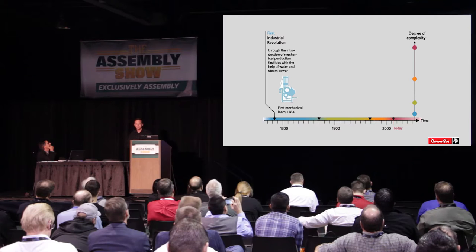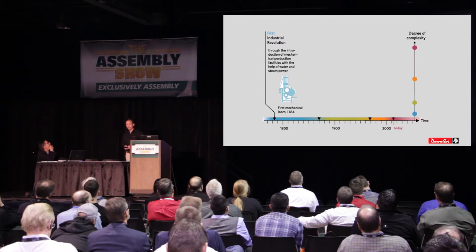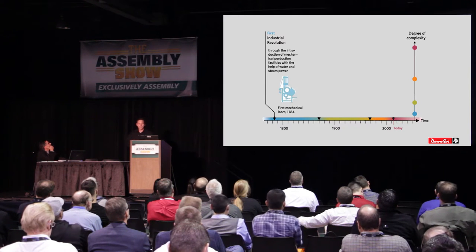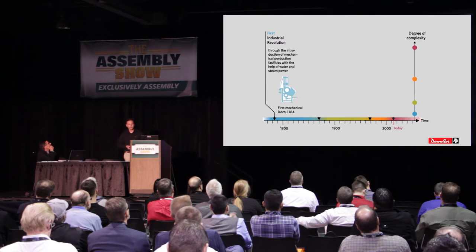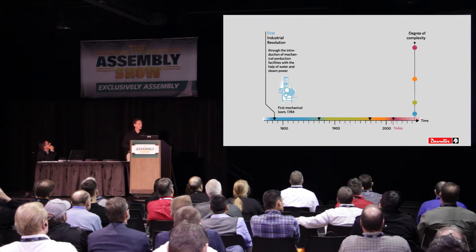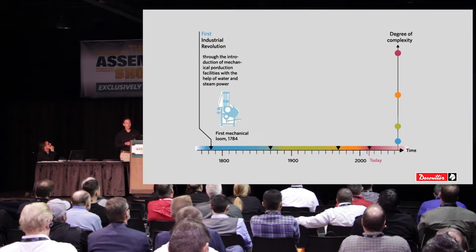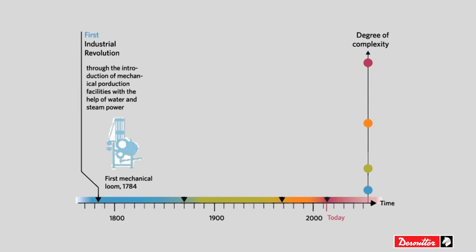Industry 4.0 gets its name from the idea that it is the fourth major industrial revolution. When we look back historically at all the industrial revolutions, one thing is very important to note. If we take a look on the very far right side, it shows the degree of complexity of each of these industrial revolutions. Starting with the first industrial revolution and the invention of steam power, which allowed us to do more with more energy.